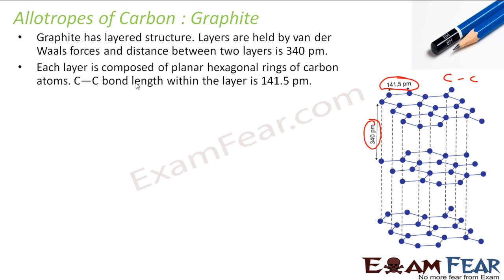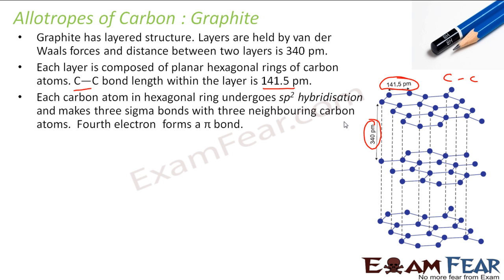Each layer is composed of hexagonal rings. There is a hexagonal ring with a carbon-carbon bond length of 141.5 picometers. Each carbon undergoes sp2 hybridization and makes 3 sigma bonds with 3 neighboring carbon atoms. The fourth electron forms a pi bond. So each carbon atom is bonded to 3 other carbon atoms — that is why it is sp2 hybridization.